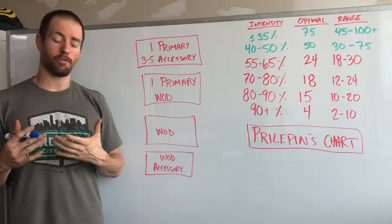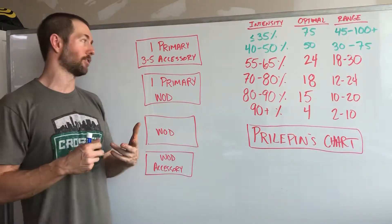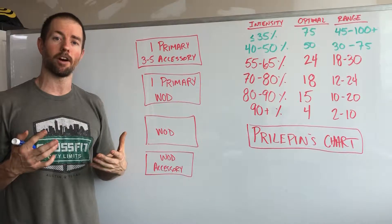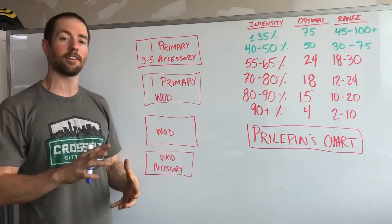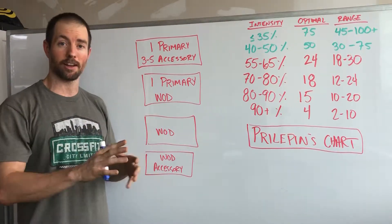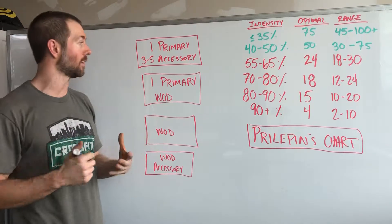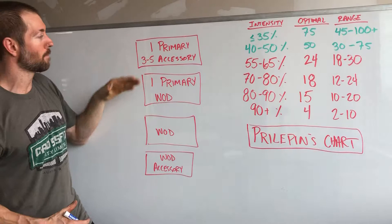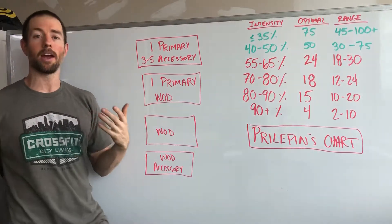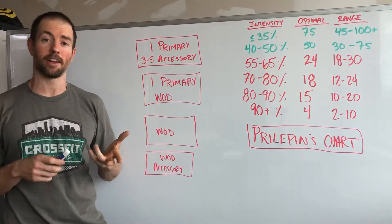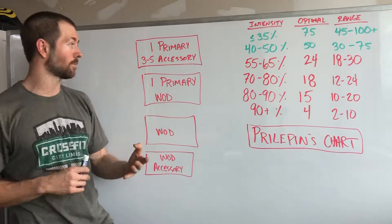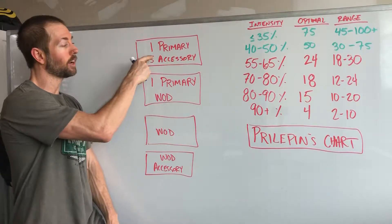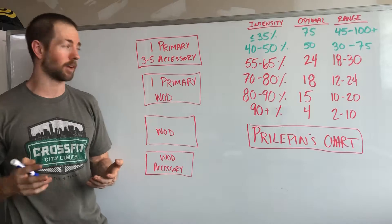Very typical for power lifters and Olympic weight lifters, and again this is where we're learning a lot of our information and figuring out how to customize it and fit it into a program here that makes sense. A lot of their programs are built up around one primary exercise, like a major lift like a bench press, a deadlift, a snatch, clean and jerk, something like that, followed by three to five sets of accessory movements.